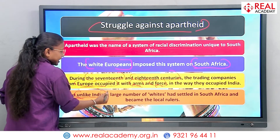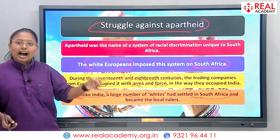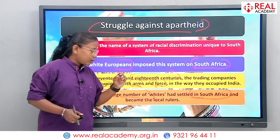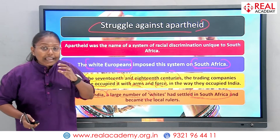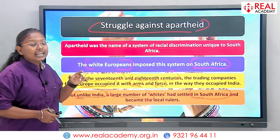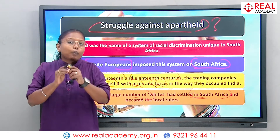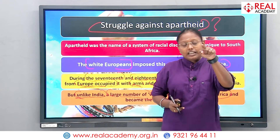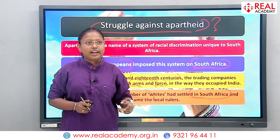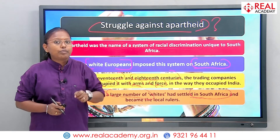Unlike India, there were also large numbers of whites who settled in the region called South Africa. They began the system of imperialism. Both groups were struggling — struggling against apartheid. If someone asks you what is apartheid, you should be able to tell. Plus, if you face racial discrimination, you should know the importance of this and be aware of what racism is.